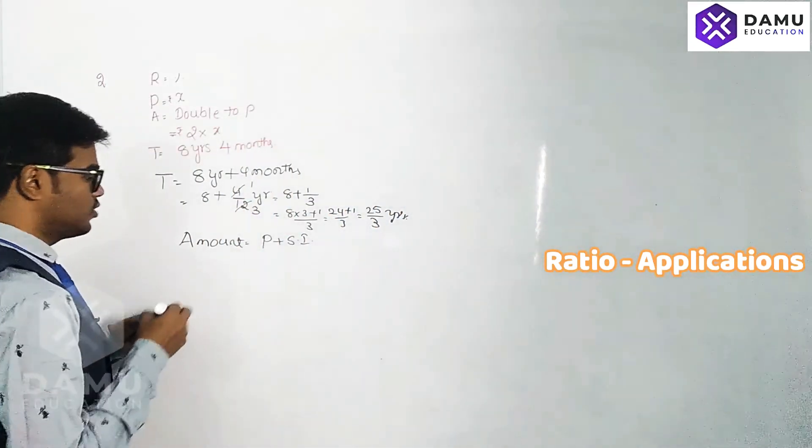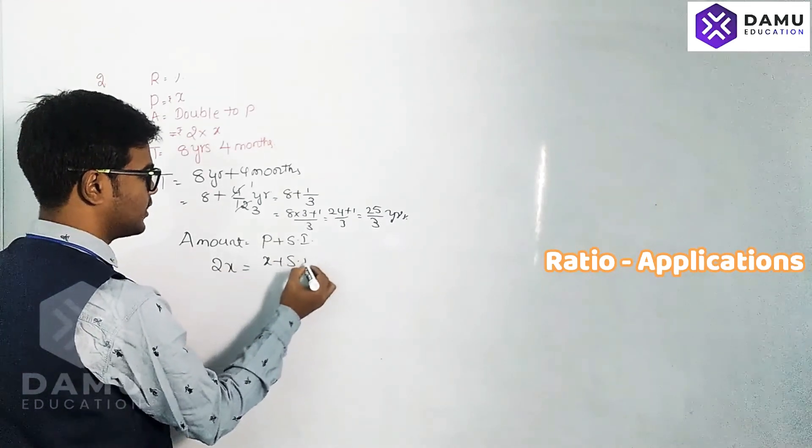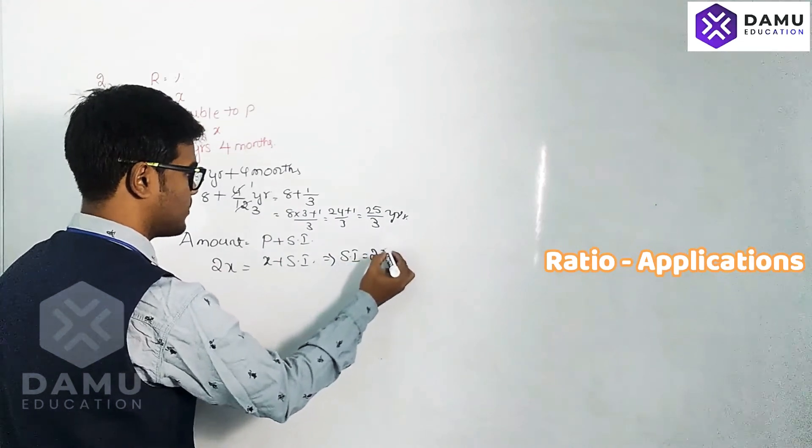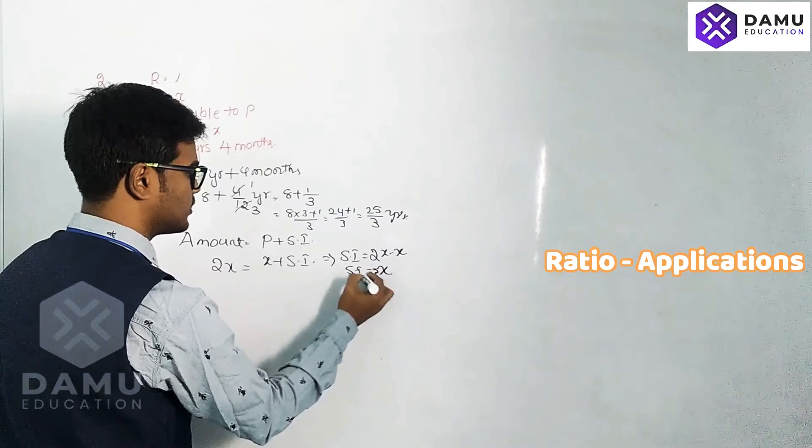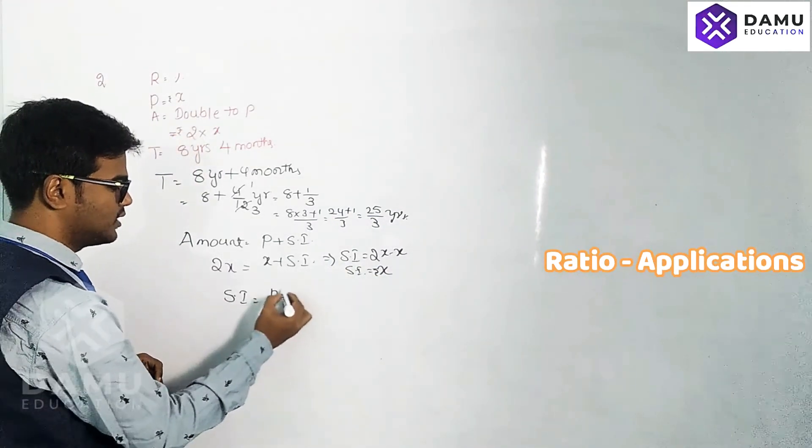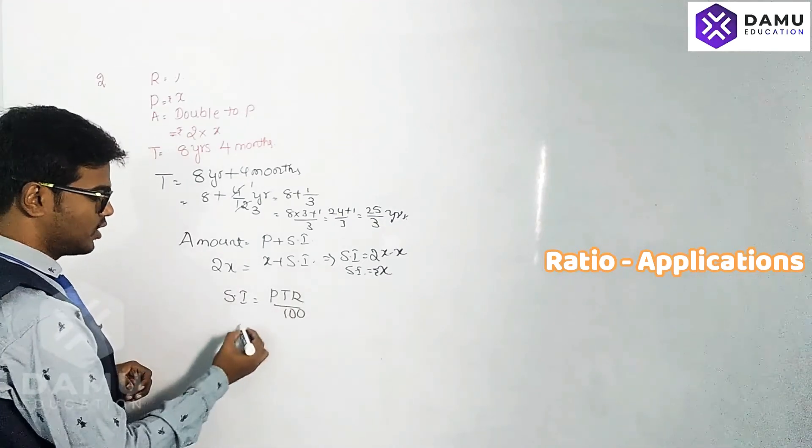Amount will be 2X. Principal is X plus Simple Interest. So Simple Interest equals 2X minus X, which is X rupees. Simple Interest formula is PTR by 100.